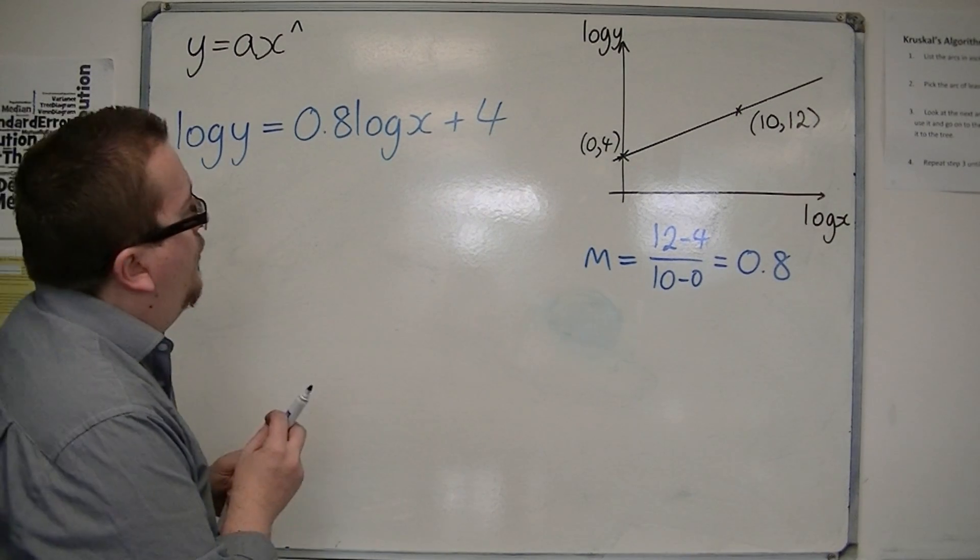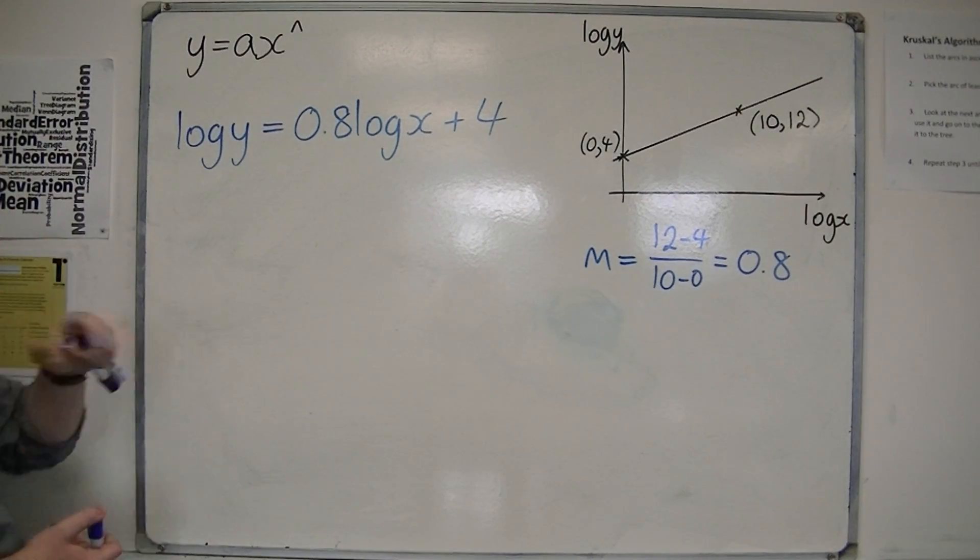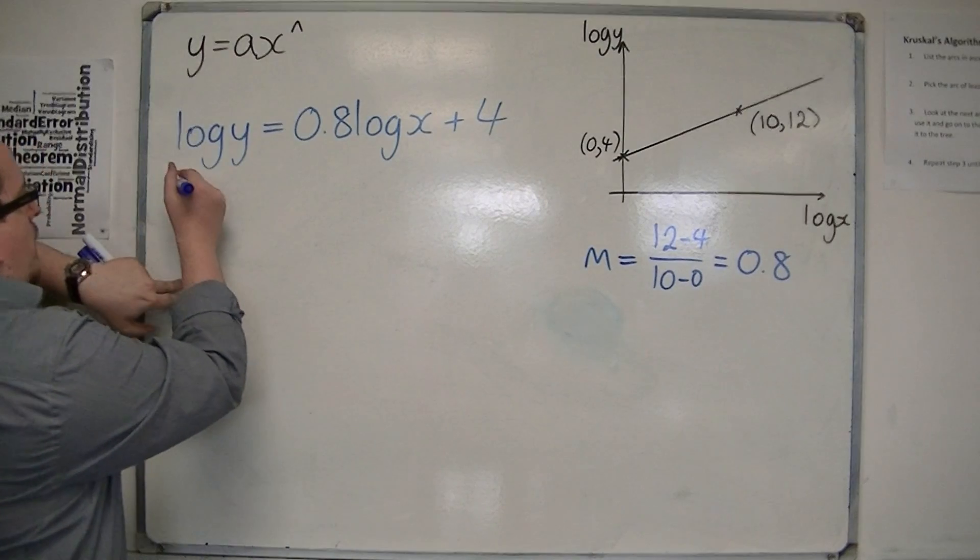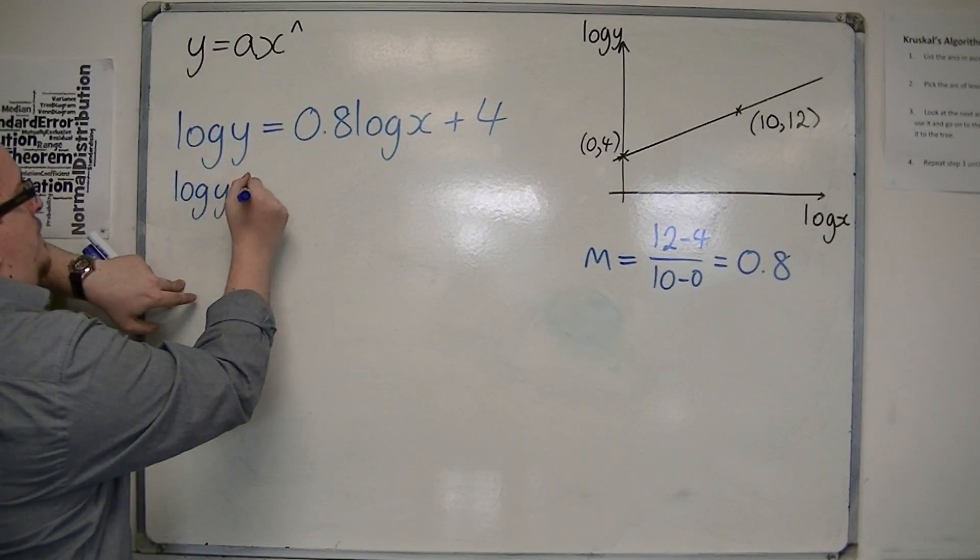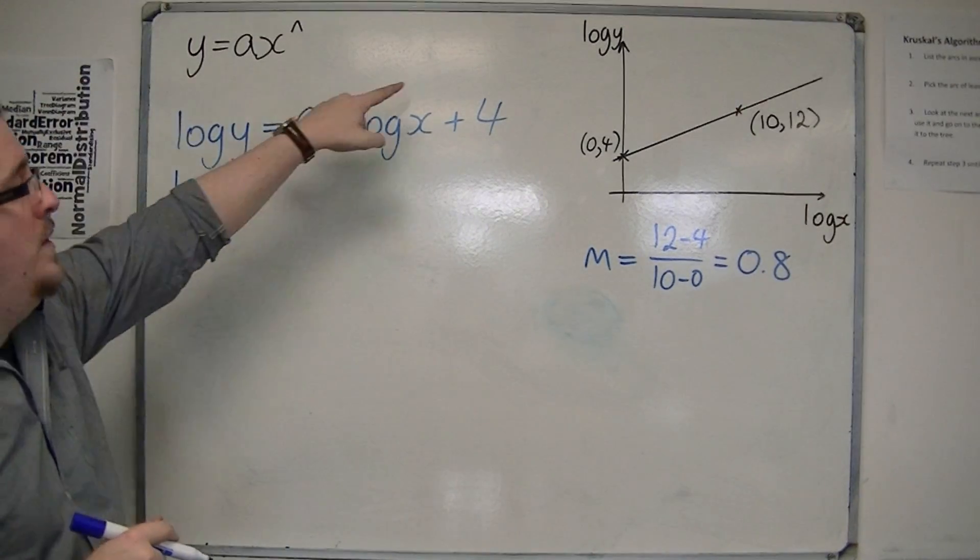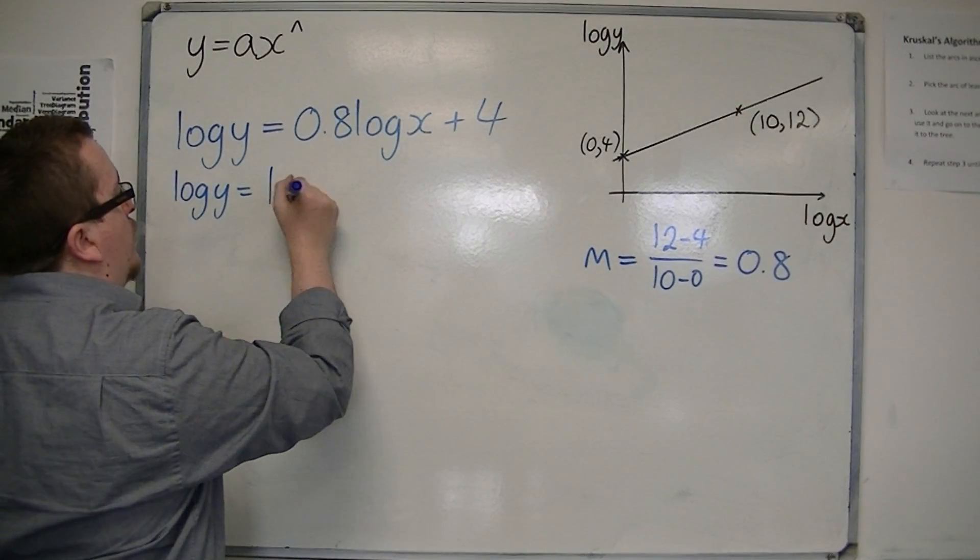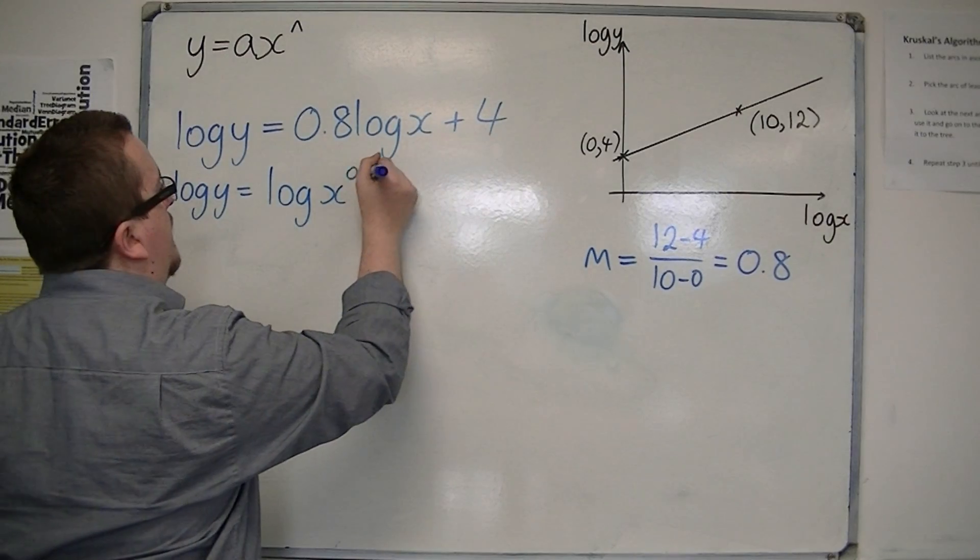So, the first thing that I want to do is let's leave the left-hand side alone. The 0.8 log x, the 0.8 can come up to the power of the x, so log of x to the 0.8.